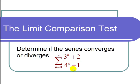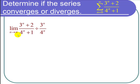And what that tells us to do is take the limit as n approaches infinity of a_n over b_n, or in our case 3 to the n plus 2 over 4 to the n plus 1 over our geometric series which is 3 to the n over 4 to the n, or 3 fourths to the n.